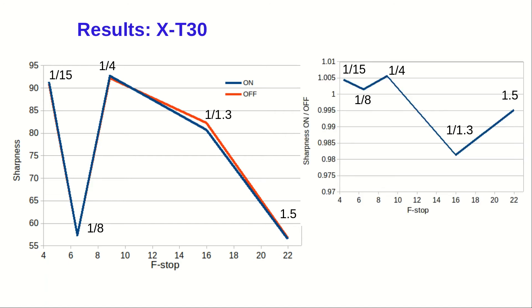This is the image sharpness ratio. The IS on is divided by the IS off. The maximal difference for the IS effects is less than 2%, which is not very much.